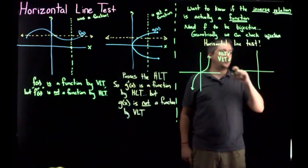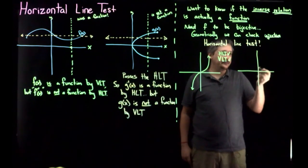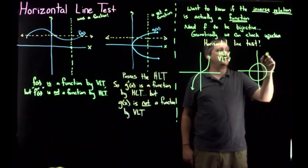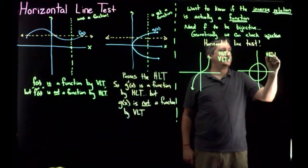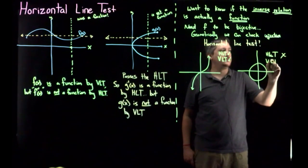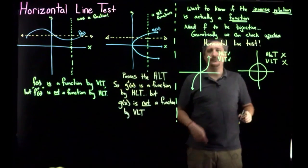And then we could do another one where, let's say, a circle. Here, HLT fails and VLT fails.